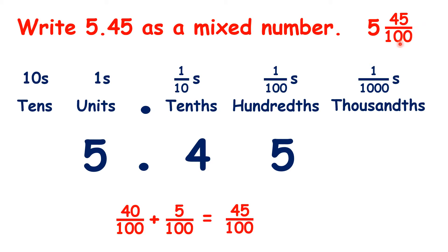Here's the interesting thing about changing decimals to mixed numbers: the denominator will always be the smallest place value of the decimal number. So here, because the smallest place value is the hundredths, our mixed number will always have hundredths.